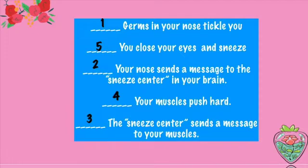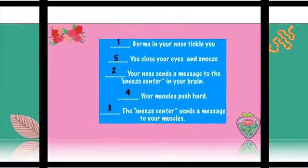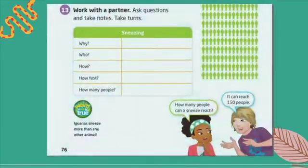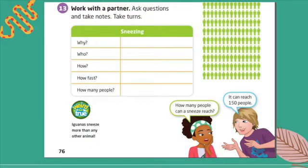Thank you Teacher Danny. Now let's continue with exercise 13. Here we're going to change the activity a little bit because you have to work with a partner, but since you don't have a partner, I'm going to help you this time. It says ask questions and take notes, taking turns. We have to write questions using why, who, how, how fast, and how many people, using the information from the reading in exercise 12.